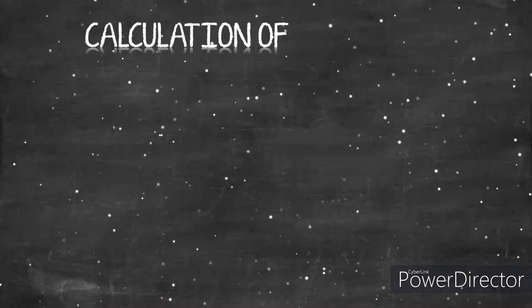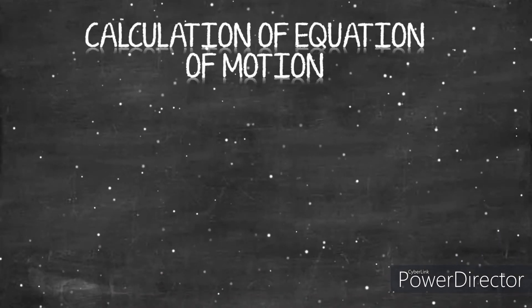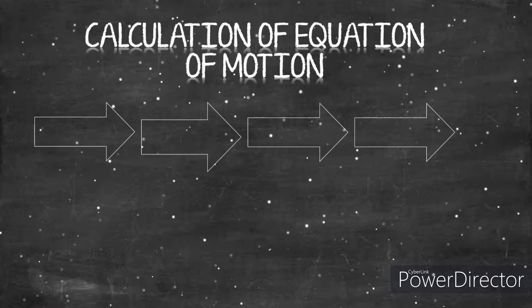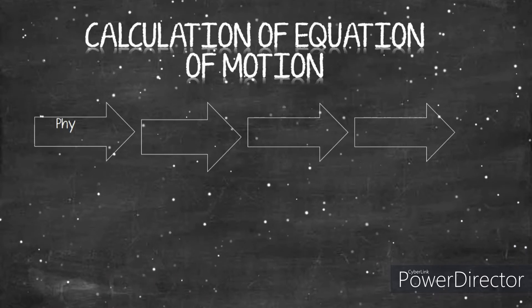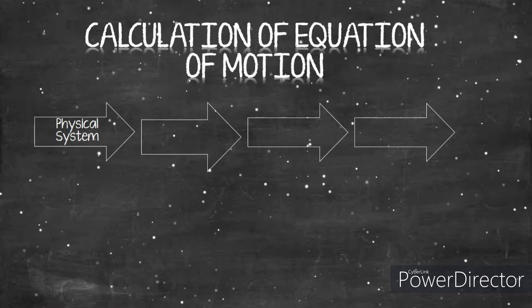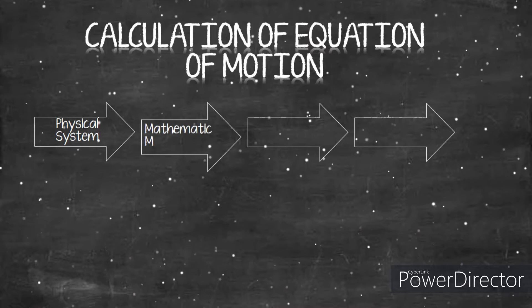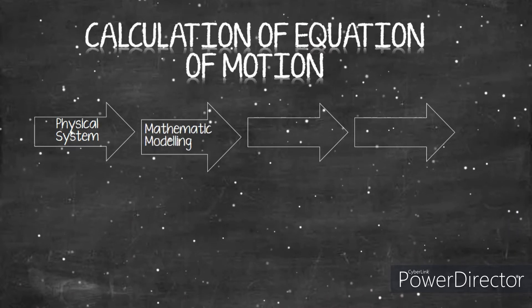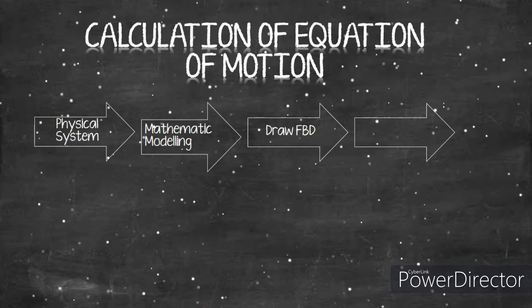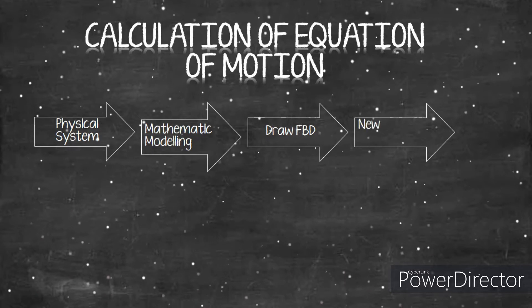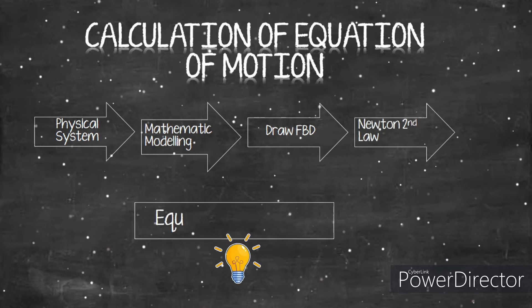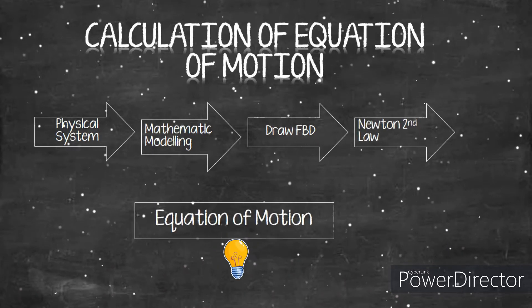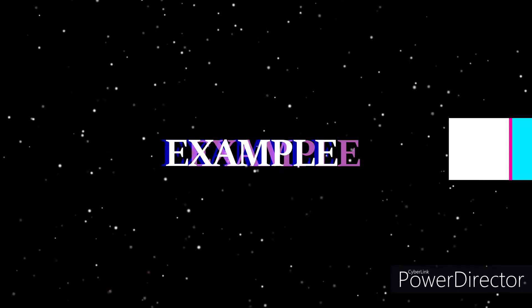For every system, we need to find the equation of motion. Here are the steps: first, observe and analyze the physical system; second, list out all mathematical equations from the given parameters; third, draw the free body diagram; fourth, apply Newton's Second Law, F = ma; and lastly, obtain the equation of motion.